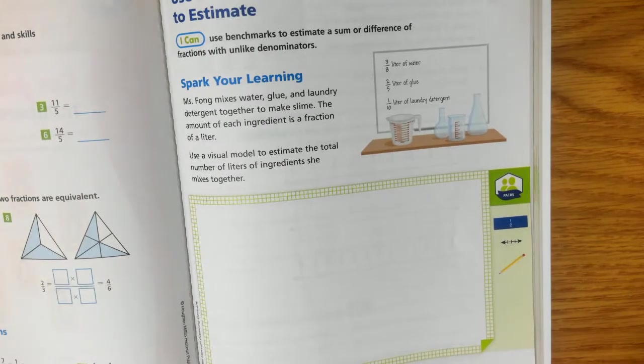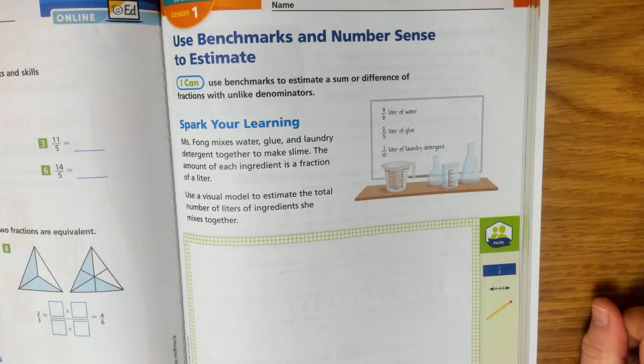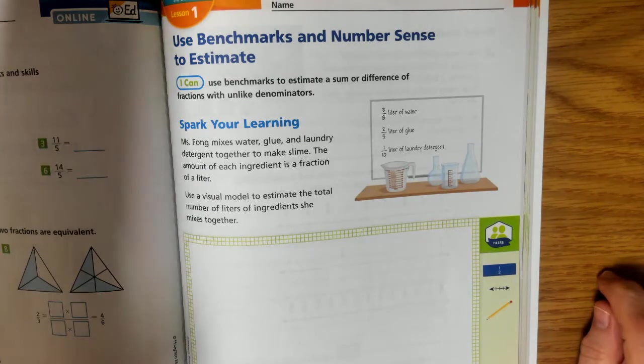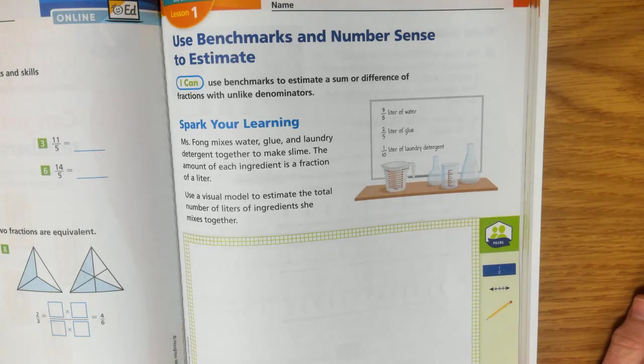So I would like you to have Module 7, Lesson 1, out in front of you. I need you to follow along with this, and then I need you to do the work, and I need you to hand it in. Alrighty, so we're going to be using benchmarks and number sets to estimate. So Ms. Fong mixes water, glue, and laundry detergent together to make slime. The amount of each ingredient is a fraction of a liter. Use a visual model to estimate the total number of liters of ingredients she mixes together.